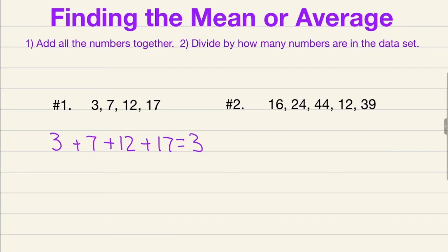When you add them all together you get a sum of 39. That's your first step in finding your mean or average — add all of the numbers in your data set and get your sum. Once you have your sum, there's one final step: take your sum of 39 and divide it.